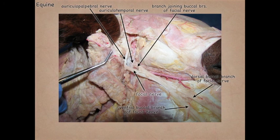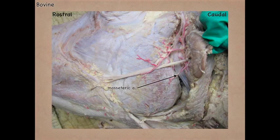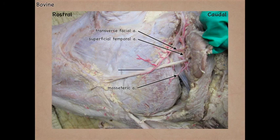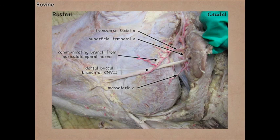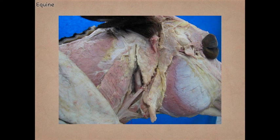There are the dorsal and ventral buccal branches and the facial nerve. Now looking at the bovine left side, we see the masseteric artery going into the masseter muscle and the transverse facial artery, which is not as dorsal as in the horse. The transverse facial comes off the superficial temporal artery, one of the terminal branches of the external carotid — the other terminal branch being the maxillary artery. Here we see the dorsal buccal branch of CN7 and the communicating branch from the auriculotemporal joining it.